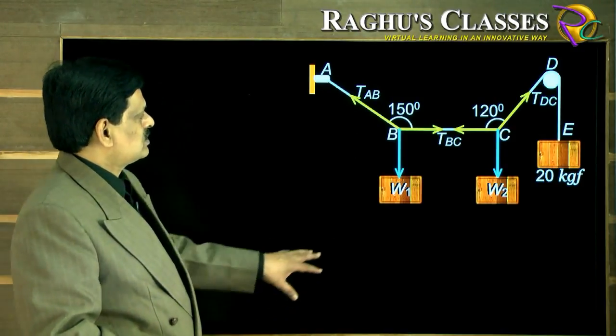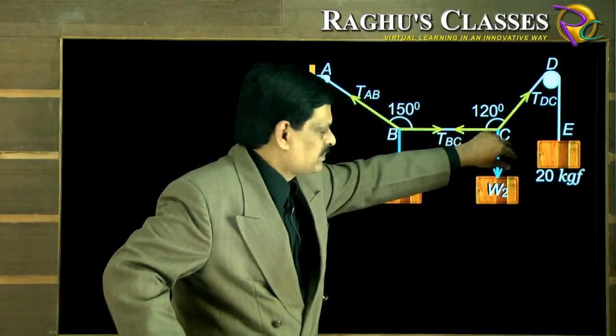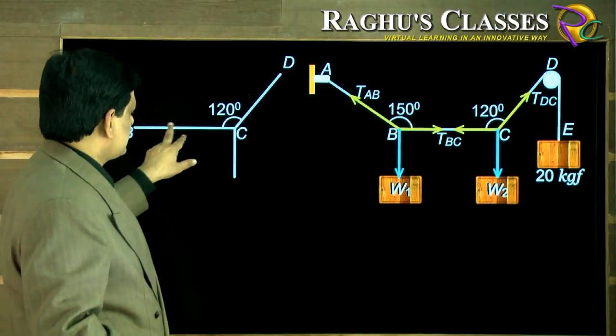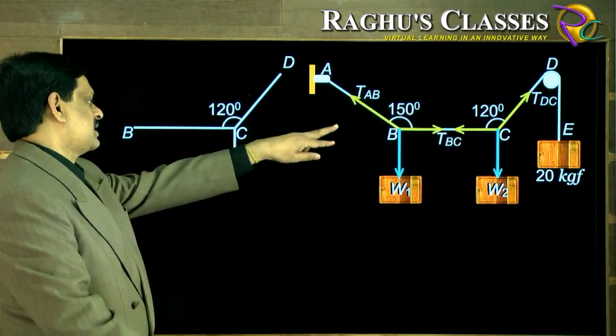Now let us take only the junction C separately. Instead of putting angles there and making it clumsy, I want to put a free body diagram for the junction C. These are the directions of the three forces at C.